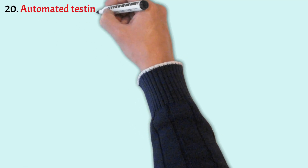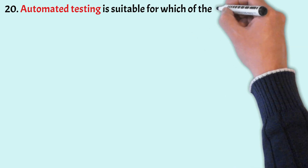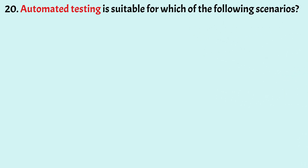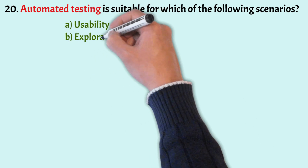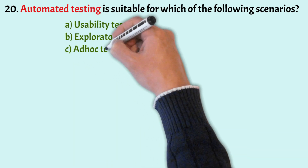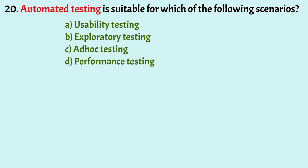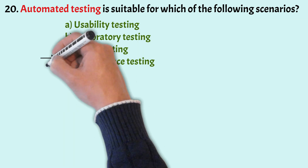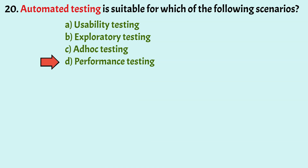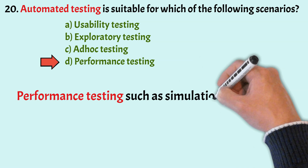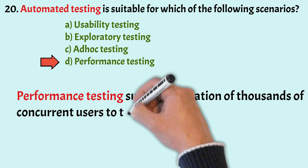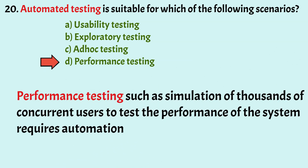Coming to the last question: Automated testing is suitable for which of the following scenarios? Options: Usability Testing, Exploratory Testing, Ad-hoc Testing, and Performance Testing. The correct option is Option D, Performance Testing. Performance Testing, such as simulation of thousands of concurrent users to test system performance, requires automation.